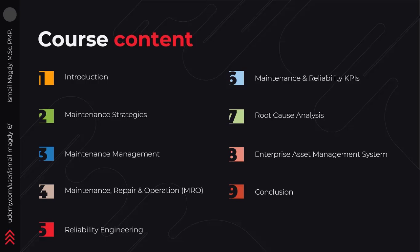The sixth chapter is going to be dedicated to maintenance and reliability KPIs, where we are going to learn about the main parameters of KPIs and especially maintenance and reliability KPIs. The seventh chapter will be about root cause analysis, where we will learn the process of root cause analysis and its importance in the world of maintenance, and when exactly we have to do it. The eighth chapter is going to be about enterprise asset management systems.